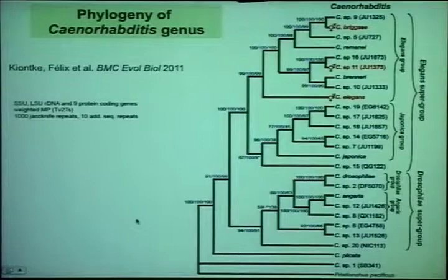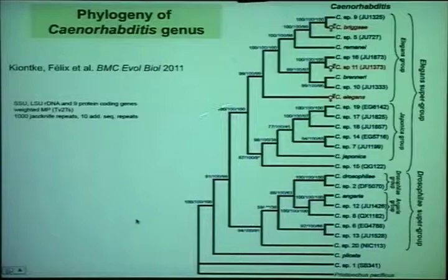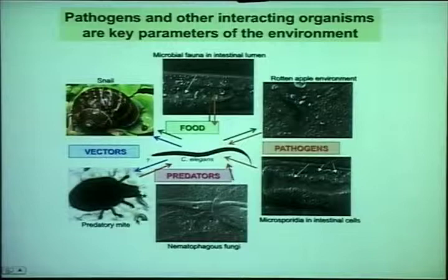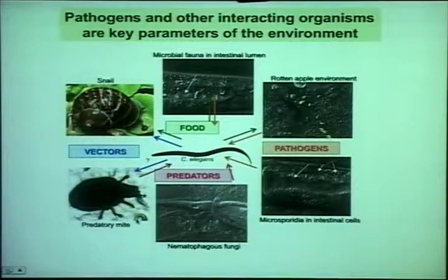A very interesting group that is coming is the group around briggsae. We still don't have the sister species, but we have many new interesting species all around. Besides temperature and the environment, what's also important in the ecology of the world are other organisms that may be interacting with C. elegans in many ways — and here I will talk more about food and pathogens.